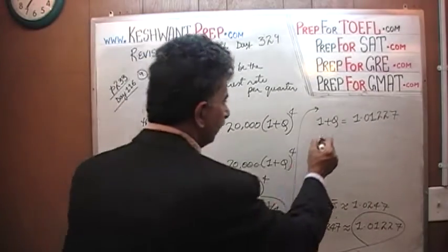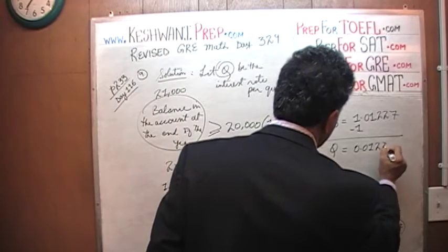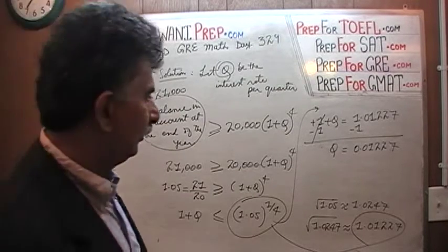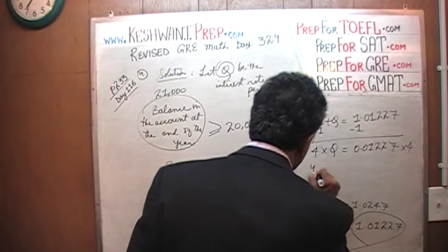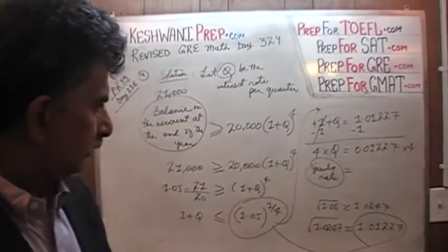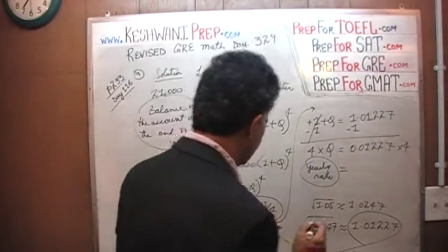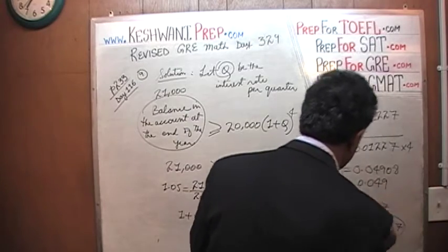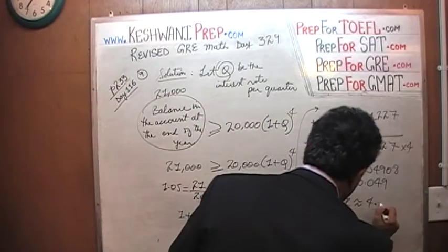So (1 + Q) is approximately 1.0127. We subtract 1 from both sides, giving Q ≈ 0.0127. Remember, Q is the quarterly rate of return. To get the yearly rate of return, we multiply by 4: 0.0127 × 4 = 0.0508, which is approximately 0.049, or about 4.9%.